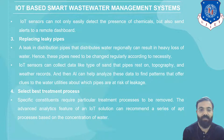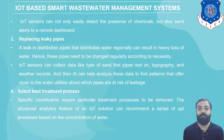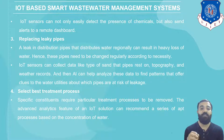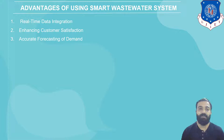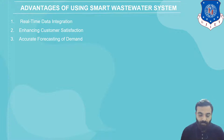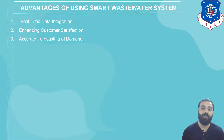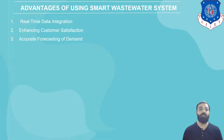Fourth, selecting the waste treatment process. Different types of substances or pollutants require different types of treatment processes for removal. The advanced analytic features of IoT can recommend a series of treatment processes based on the concentrations of water contaminants. The advantages of using smart waste water systems are: real-time data integration, enhancing customer satisfaction, and accurate forecasting of demand. By IoT sensors you can get real-time data integration. You can supply water according to demand, and by using different surveys and technologies, you can forecast population needs and supply water accordingly.